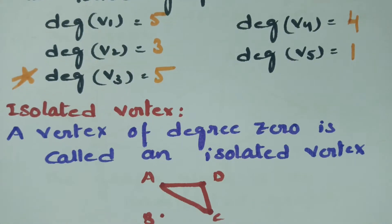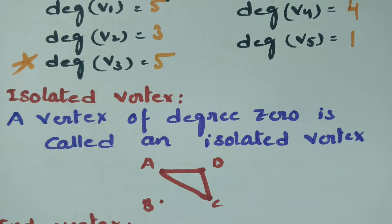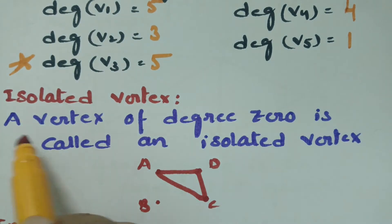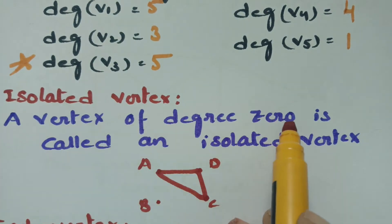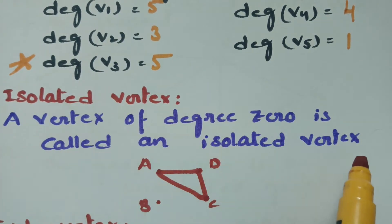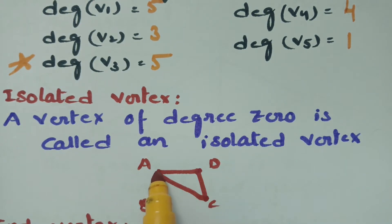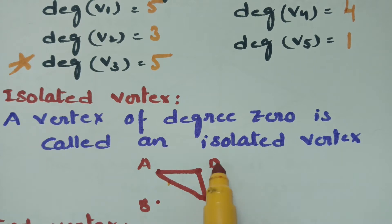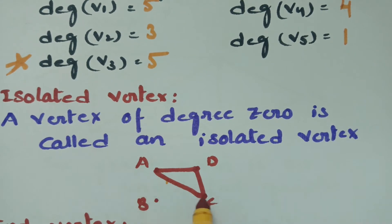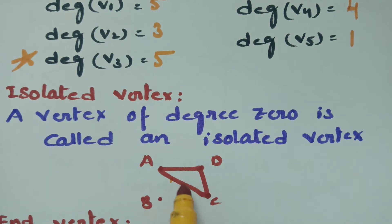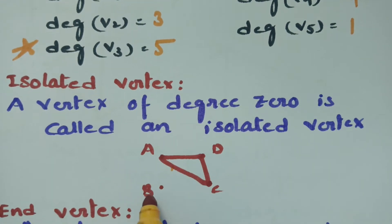What is an isolated vertex? A vertex of degree 0 is called an isolated vertex. In this diagram, vertices a, b, c, d are 4 vertices. The degree of a is 2, degree of c is 2, and degree of d is 2, whereas vertex b has no edge connecting to any other vertex — therefore b is an isolated vertex.